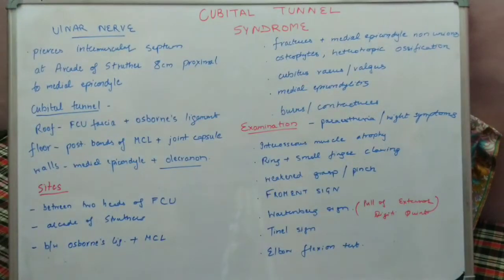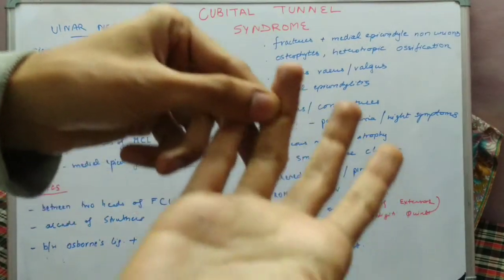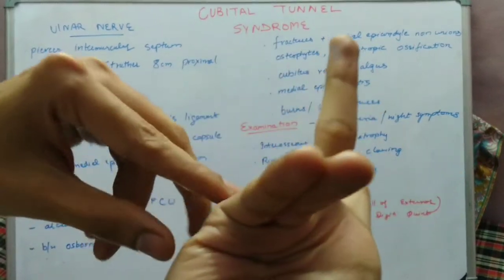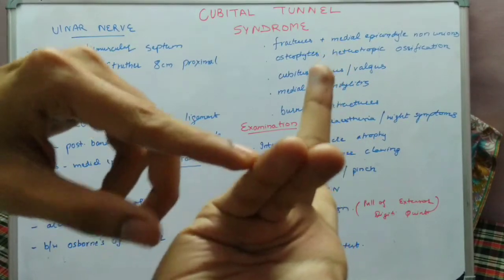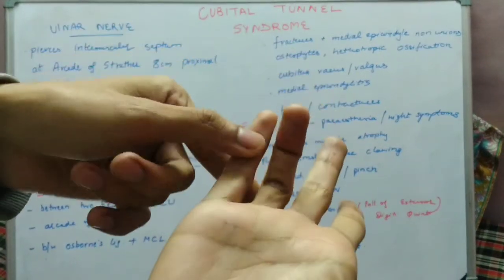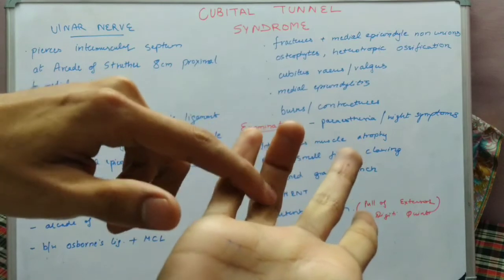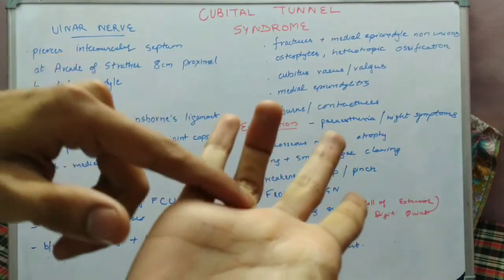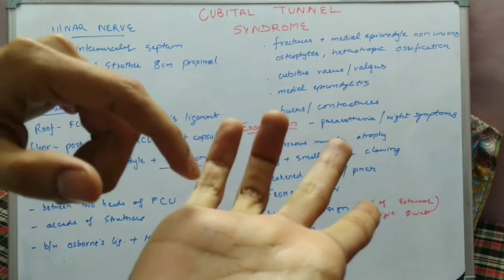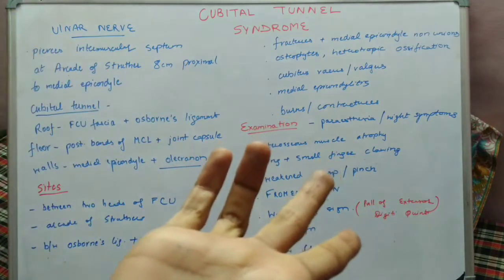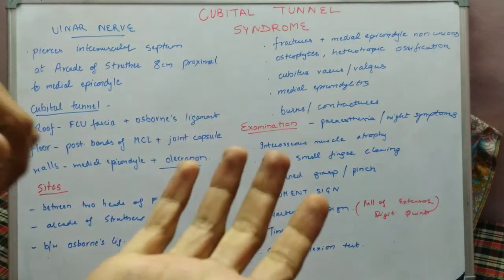Muscle atrophy can occur due to atrophy of the interossei and the lumbricals supplied by the ulnar nerve. Ring finger and small finger clawing can occur because the lumbricals, which cause flexion at the MCP joint and extension at the IP joint, are lost. This leads to clawing — flexion at the IP joint and extension at the MCP joint — due to loss of lumbrical action. The ulnar-sided lumbricals are supplied by the ulnar nerve.